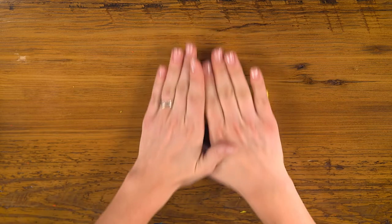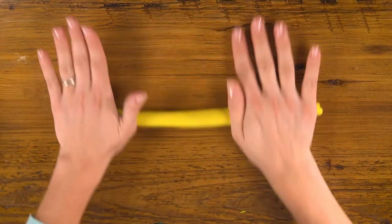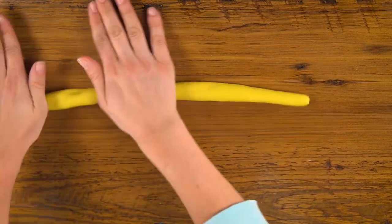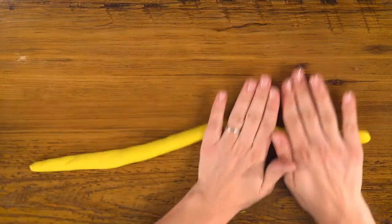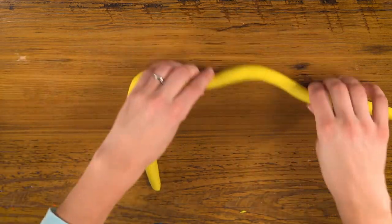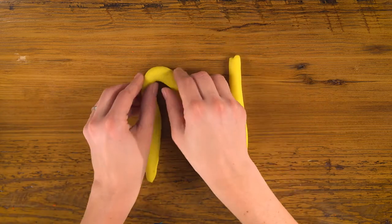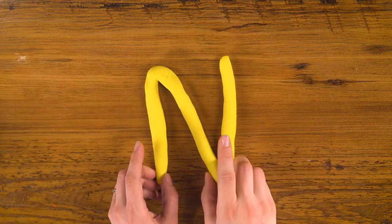Next up is N. Let's stretch out a piece of rope, nice and long. Just make an N very simply, like that.